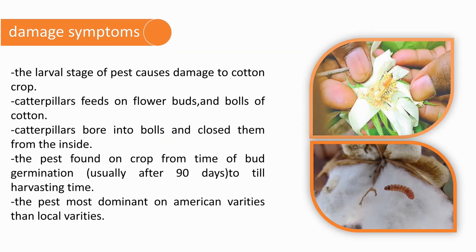The larval stage of the pest causes damage to the cotton crop. Caterpillars feed on flower buds and bolls. Cotton caterpillars bore into bolls and destroy them from the inside. The pest is found on the crop from the time of bud germination, usually after 90 days, until harvesting time. The pest is most dominant on American varieties compared to local varieties.